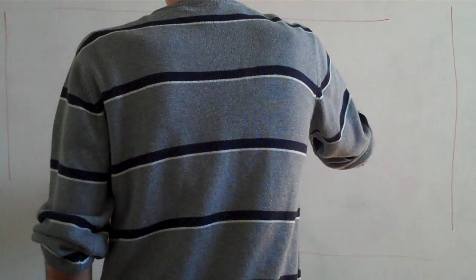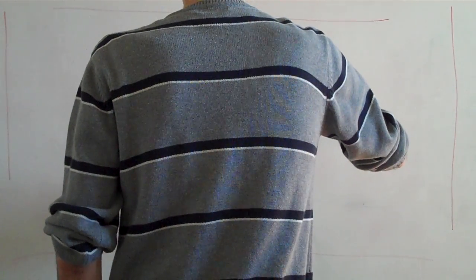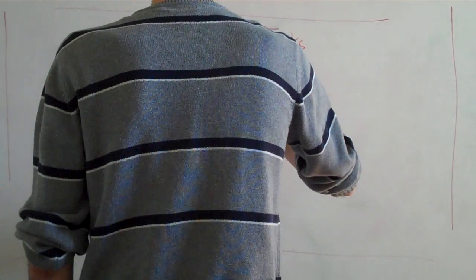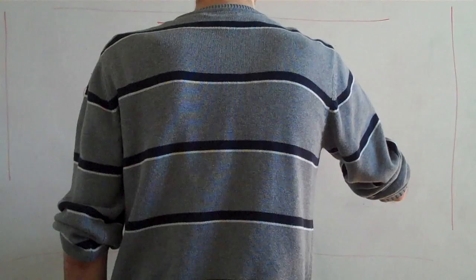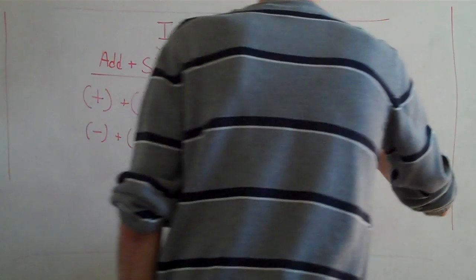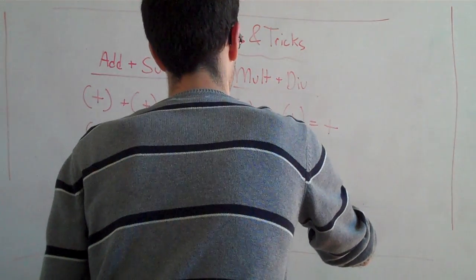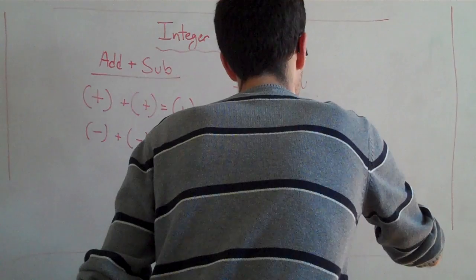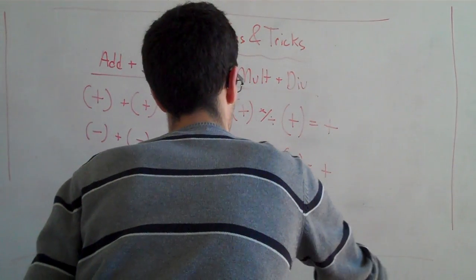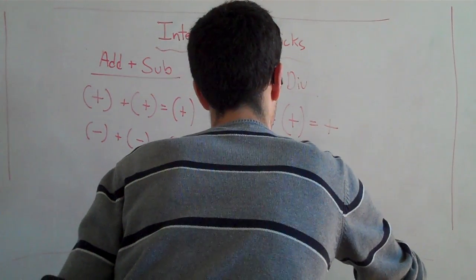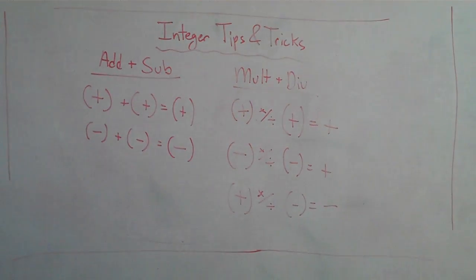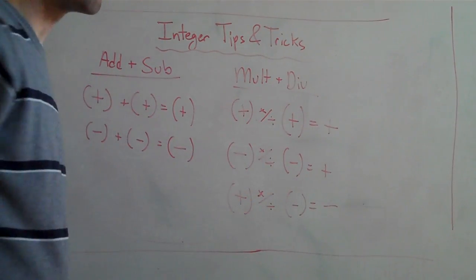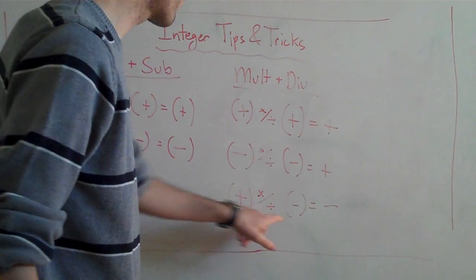Let's do multiplication and division really quick. If we have a positive times or divided by a positive, what's the result going to be? It's going to be positive. If we have a negative times or divided by a negative, it's going to be a positive. And if we have a positive combined with a negative, it's going to be a negative. The easiest way to remember that for multiplication and division: if the signs are the same — positive/positive or negative/negative — it's going to be positive. If the signs are different, it's going to be negative.